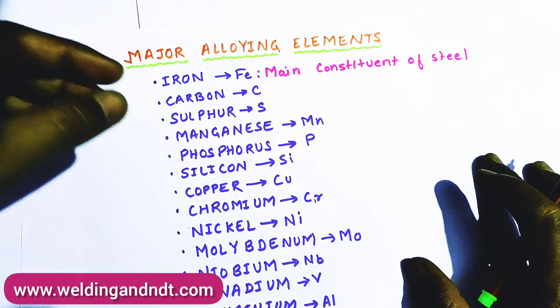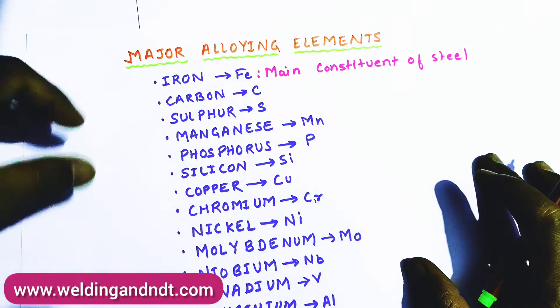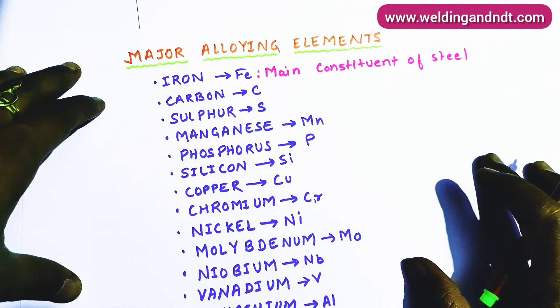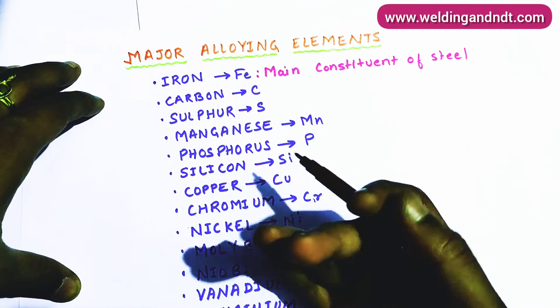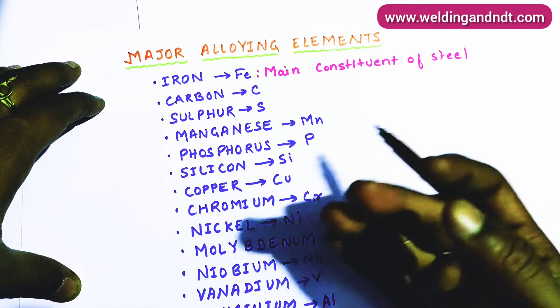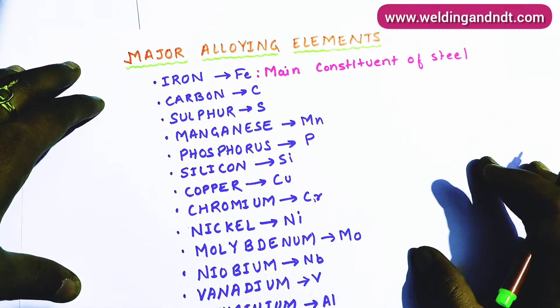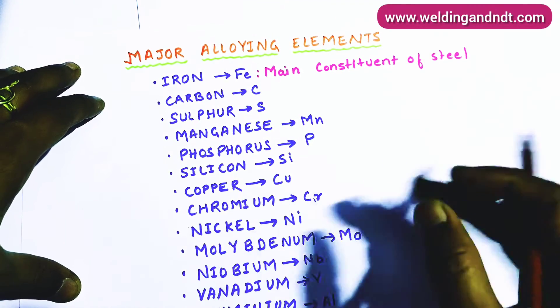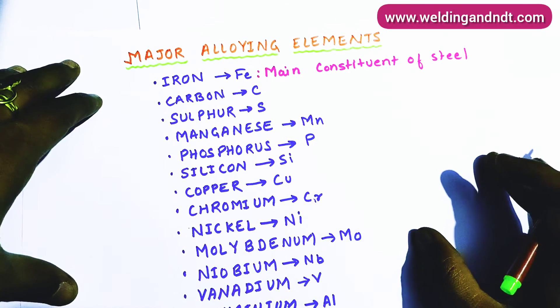Alloying elements are elements which are mixed in steel to get some improved or desired properties.